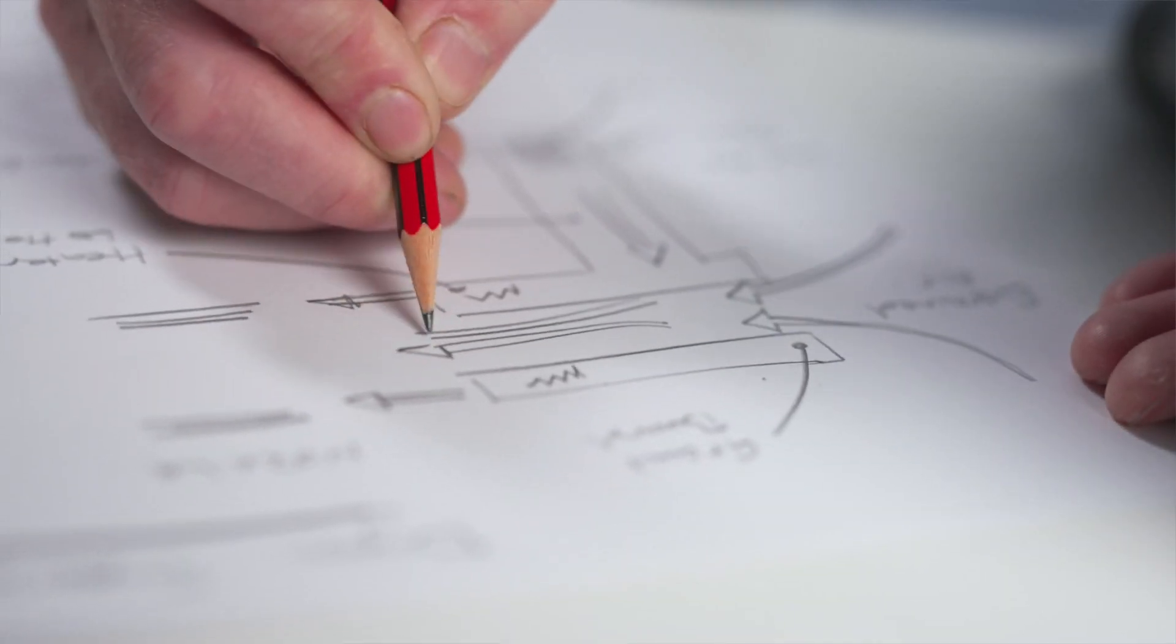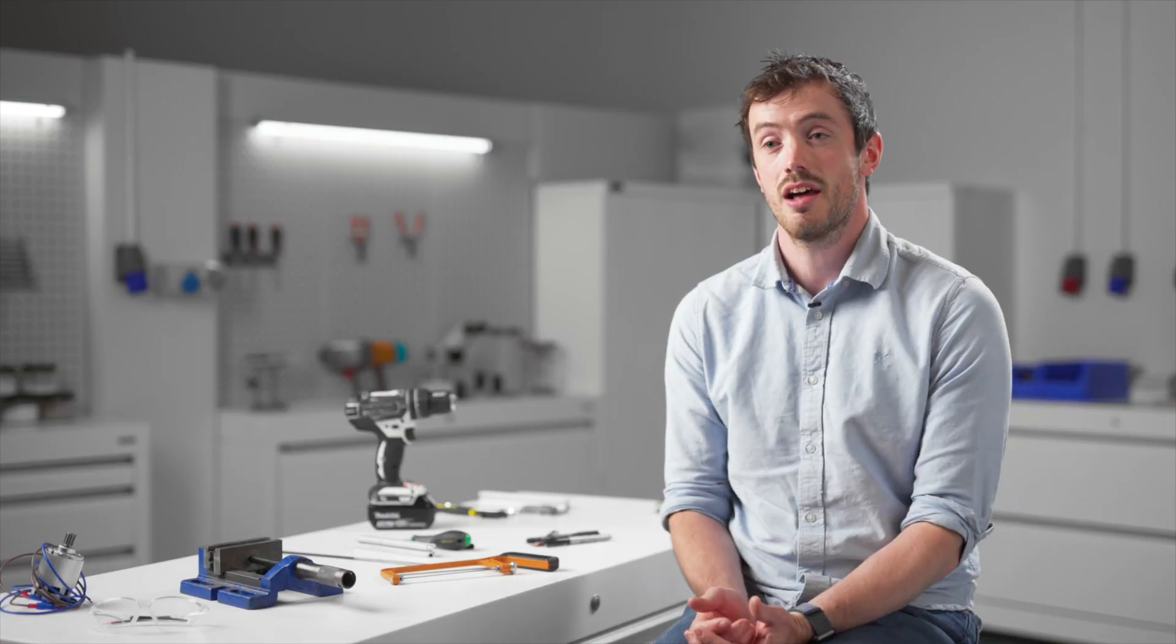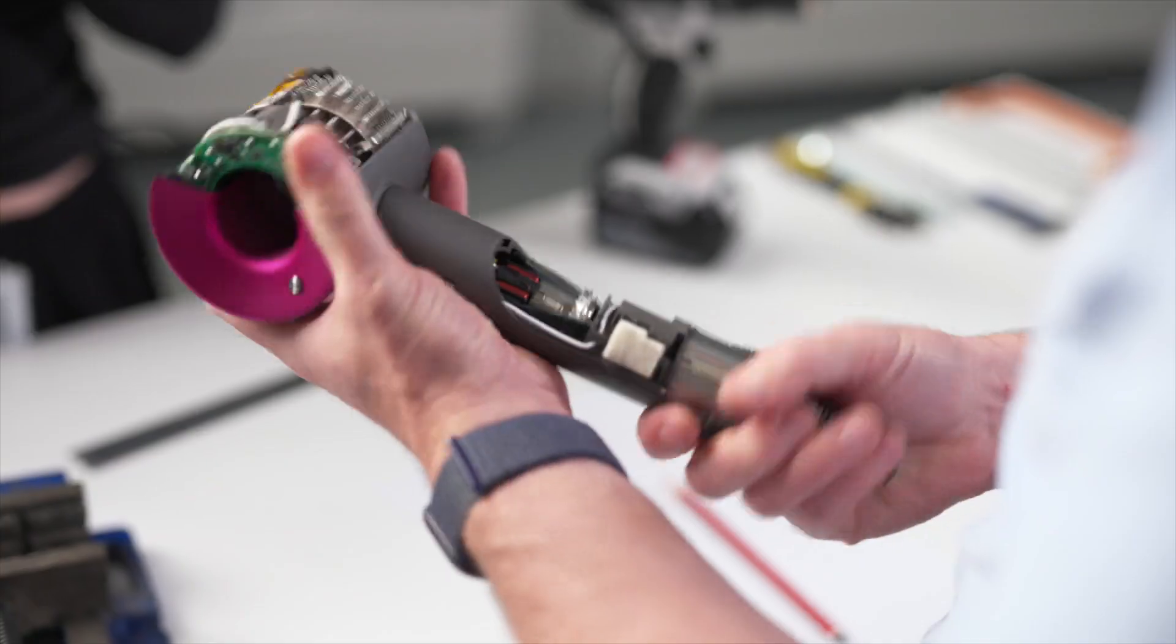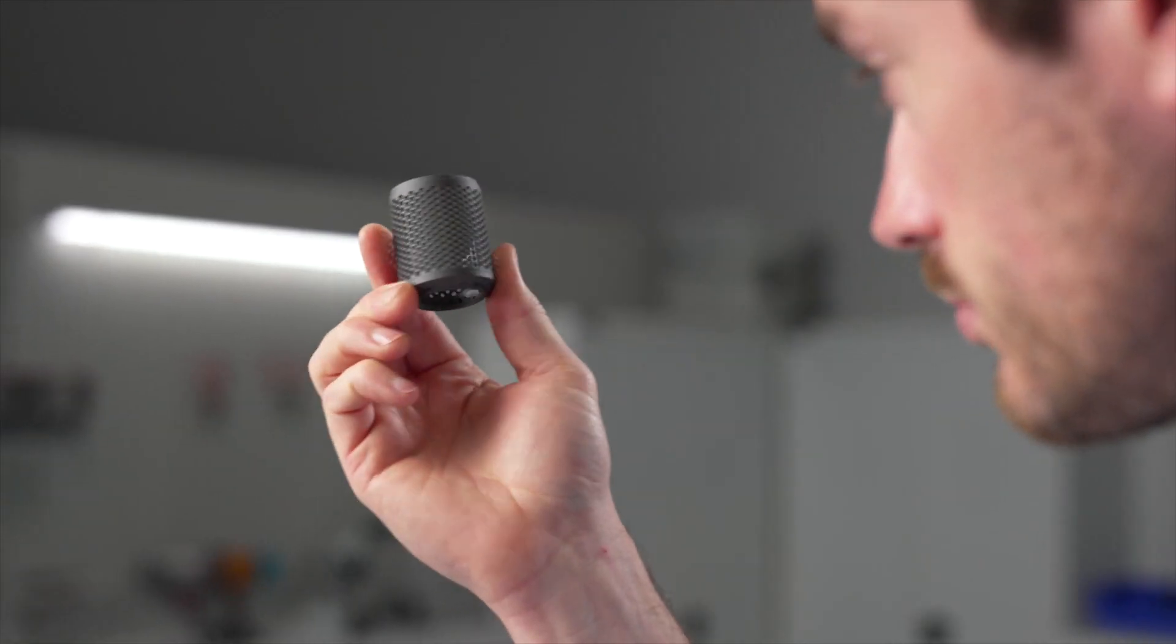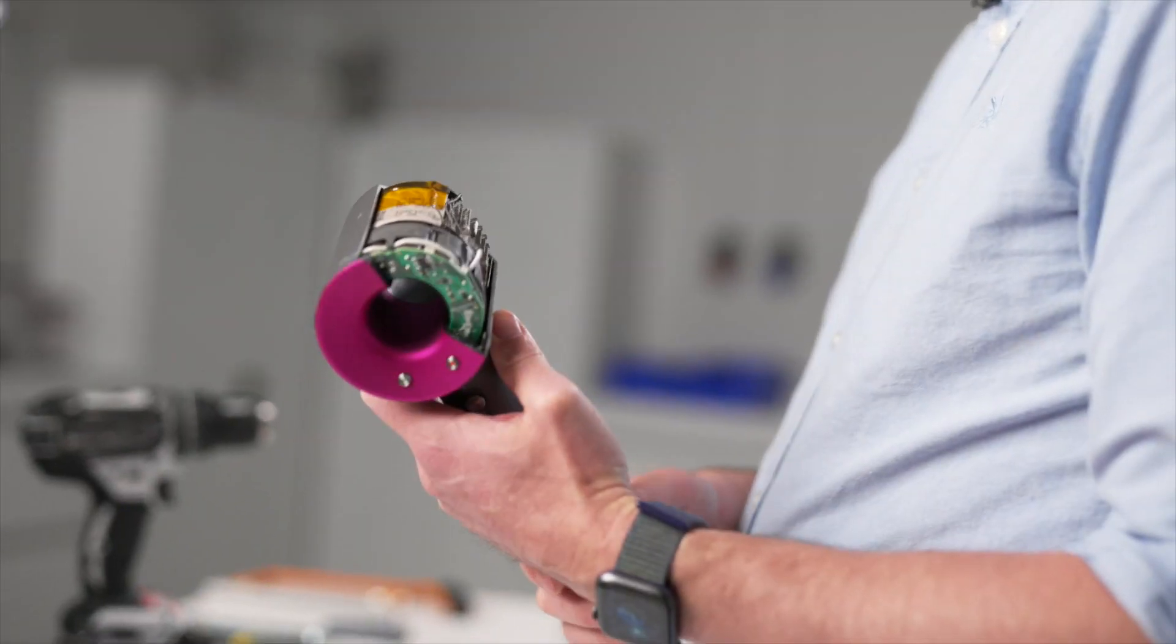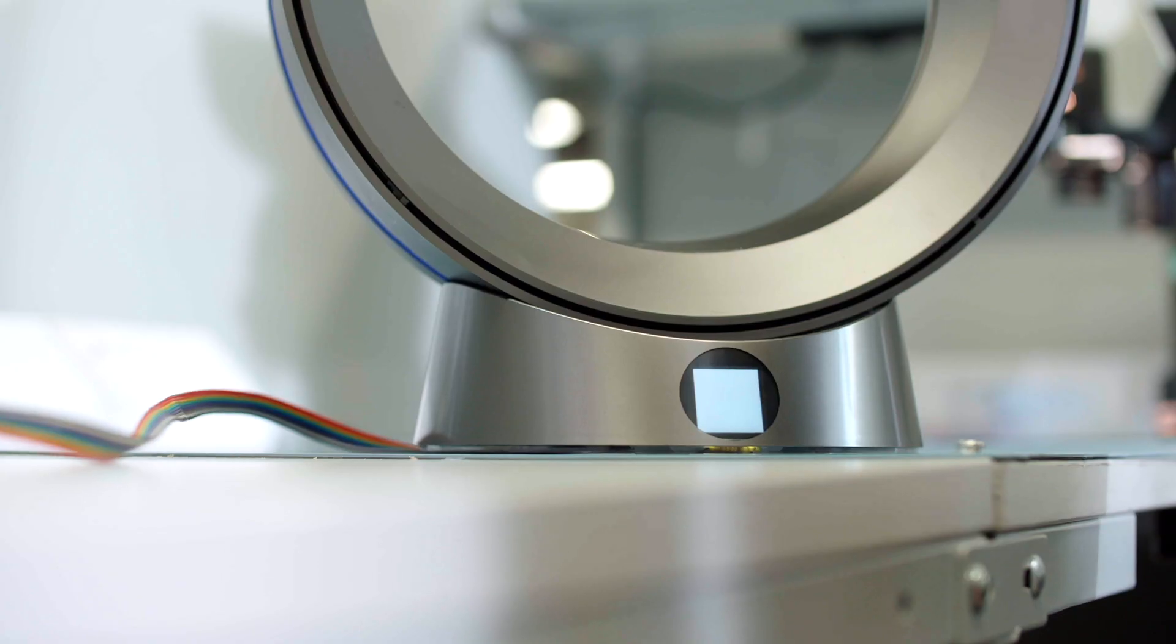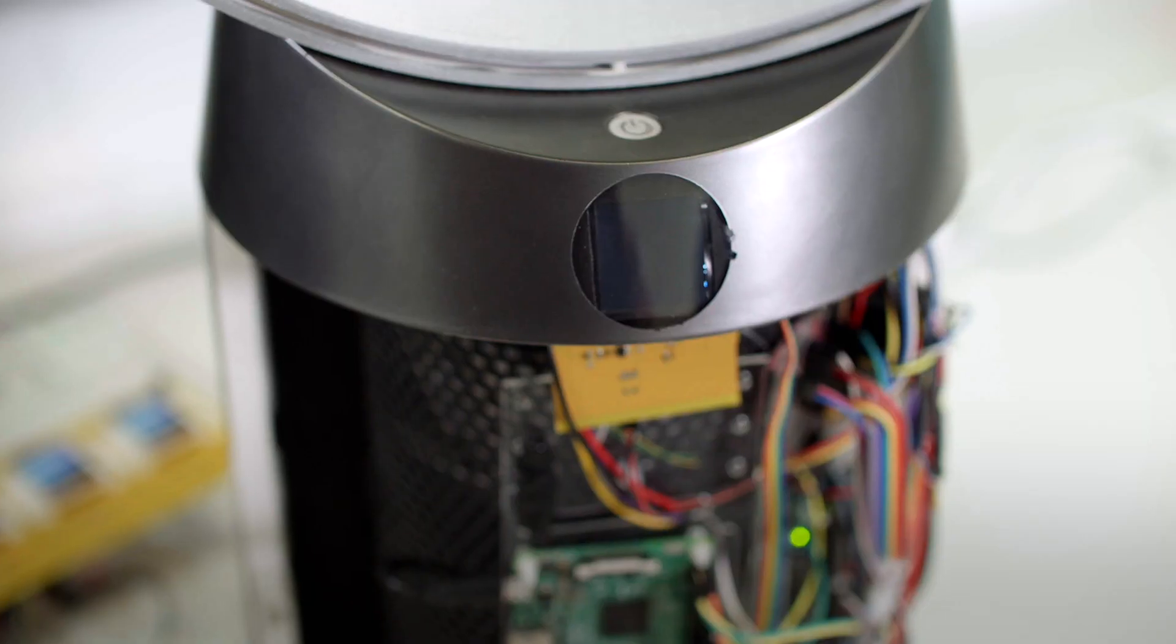A Design Engineer is all about how we bring an idea to life. So we look at how the design functions, how it works, what are the components that are in the product, and also how it looks, how you interact with the product, what buttons to use, what is the software, and how we instruct the machine to tell you what it does.